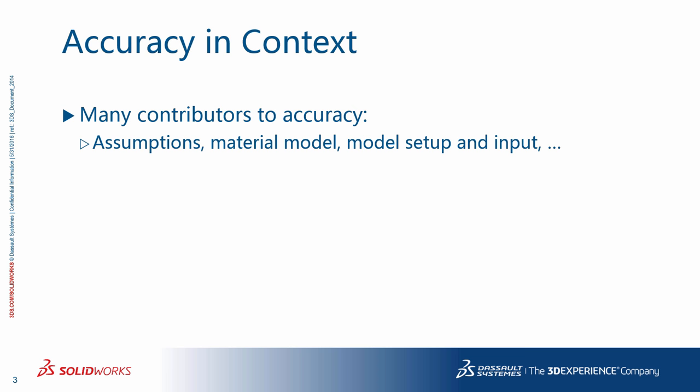The definition of accuracy can be very broad. If you define accuracy as the real-world behavior — that is a real prototype — versus the simulated behavior, that is a virtual prototype, then there are many contributors to accuracy and potentials for discrepancy between real and simulated. To get the two as close as possible, the assumptions must be reasonable, the model must be set up correctly, the input values must be reliable, and the material model must be representative.